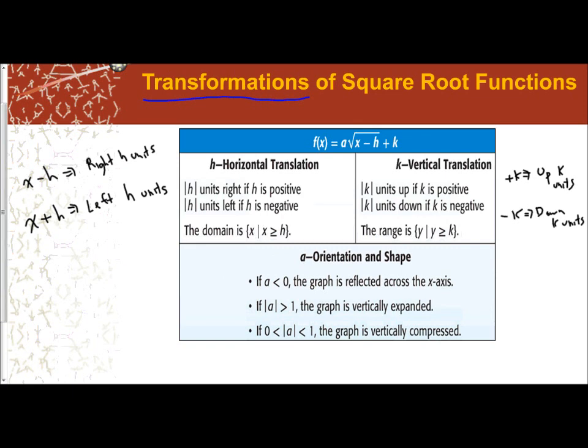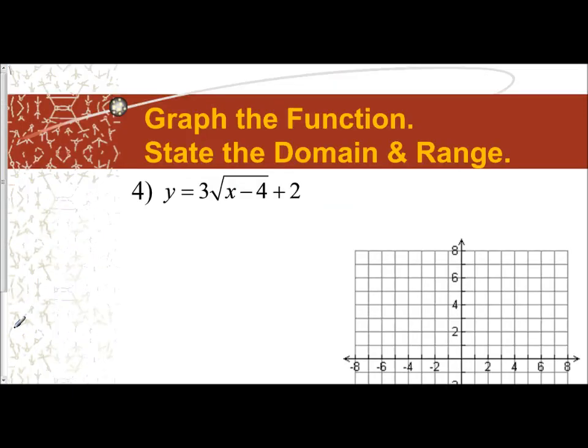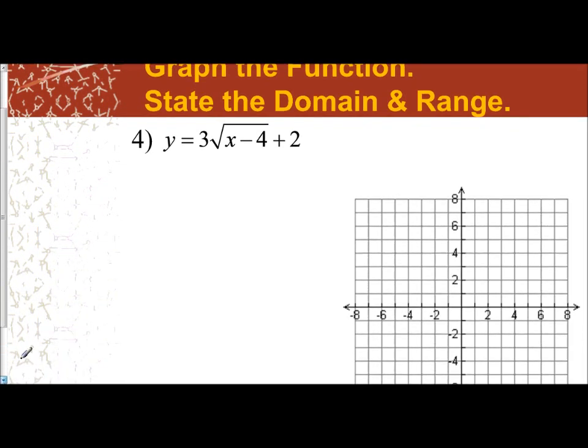Let's apply this with one example. We have here y equals 3 times the square root of x minus 4 plus 2. We want to graph the function and state the domain and range. So I'm going to use the a, h, and k to graph a function. First thing I do is I look at what's my a, what's my h, and what's my k. So I always write down what the transformation general form is. I see a is 3, h is 4, and k is 2.